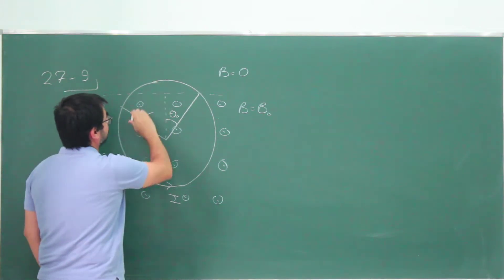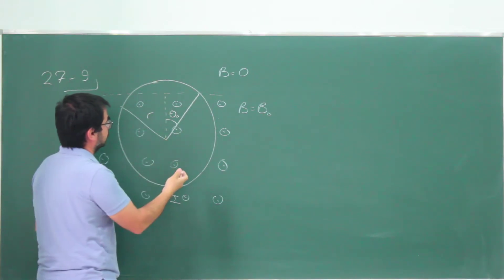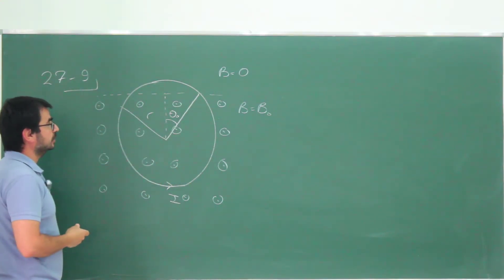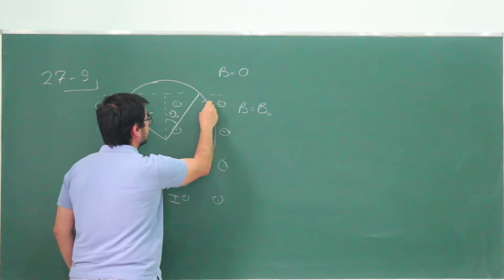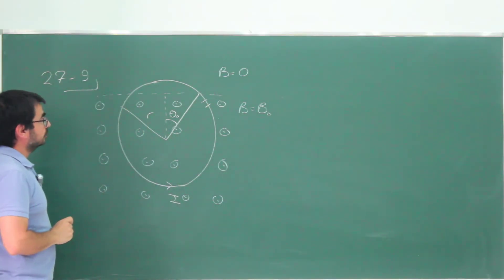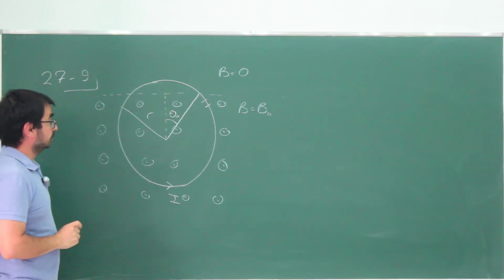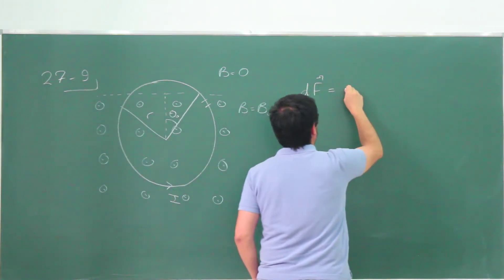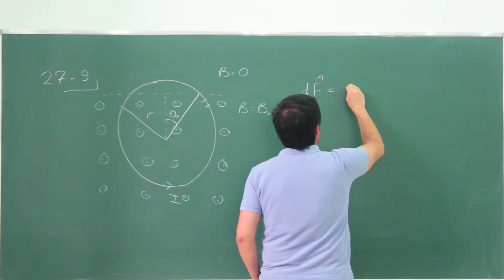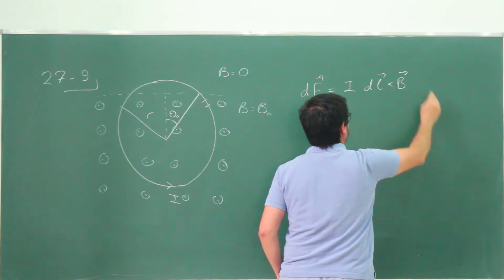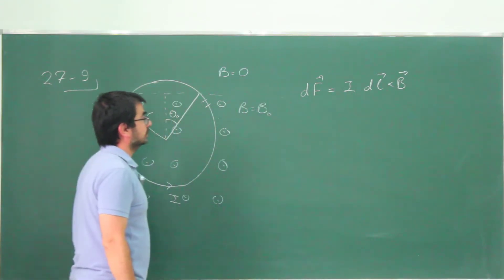We are going to calculate the force on this loop. The force is not going to be constant because the direction of the current is changing. So what we need to do is divide the loop into little segments of length dl, and calculate the force on each of those parts. The force on each part is dF = i dl × B.